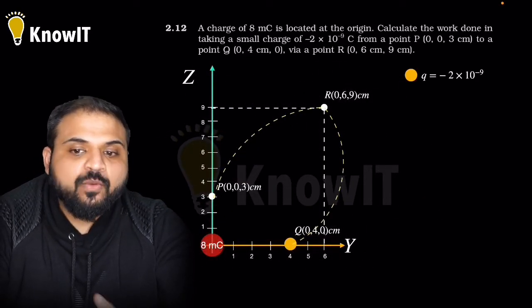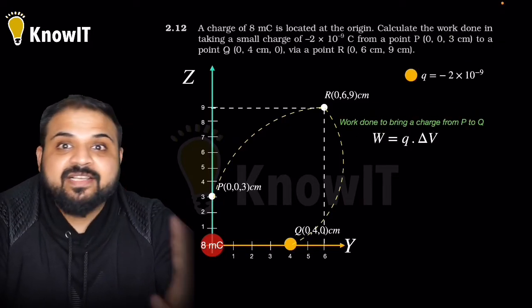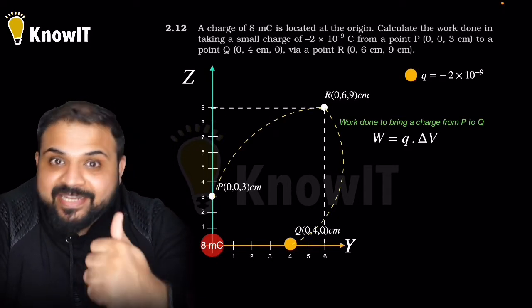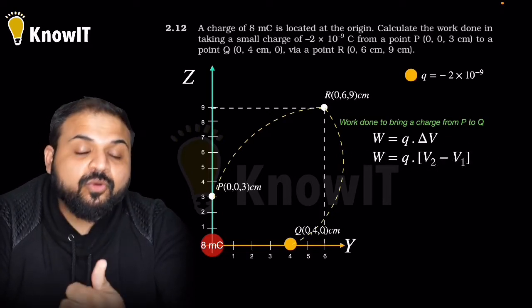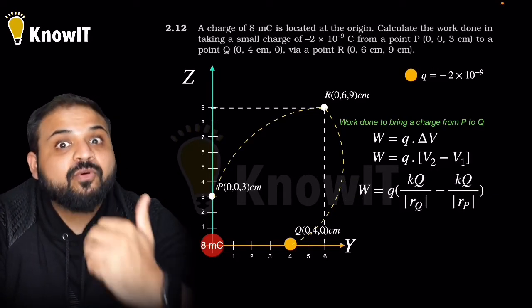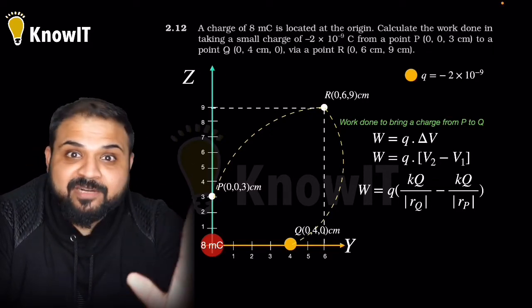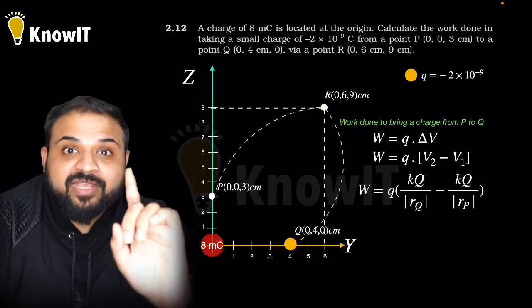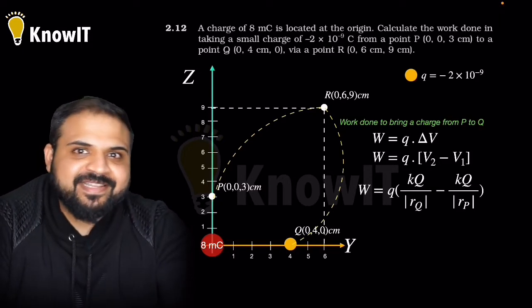From the animation you can see this charge goes from here and goes via this point. We have to find work done, and the work done formula is Q delta V. But this delta V indicates the potential difference between final and initial points, which are P and Q. When we elaborate this, V2 minus V1 is V final minus V initial, so kQ by r_Q where it ends minus kQ by r_P where it started. The point R that we took at (0, 6, 9) has no importance because work done depends on voltage difference, which is a point function depending only on initial and final points.